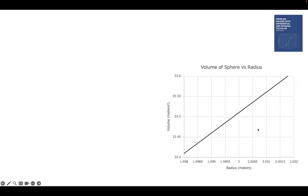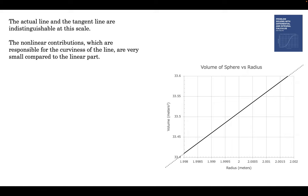And not surprisingly, the line looks straight when you zoom in that close. And that's a key principle in differential calculus. The actual line and the tangent line are indistinguishable. Let's put the tangent line in there, and you can see it's the same line. There's a little bit of curvature, but you just can't see it at this scale.